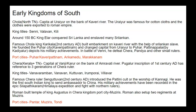Roman people built a temple of King Augustus in the Chera Kingdom port city of Mujris. Roman people also set up two regiments at Mujris port, indicating extensive trade with the southern kingdoms. The port cities of the Chera Kingdom are Pantar, Mujris and Tondi.